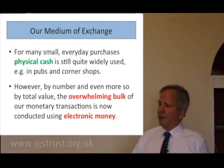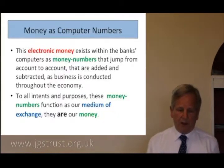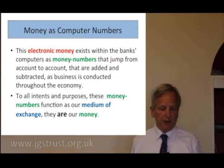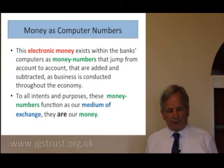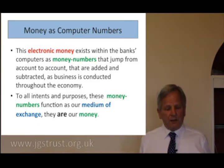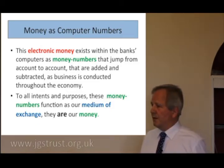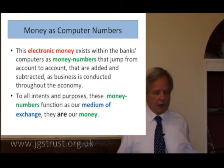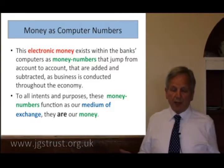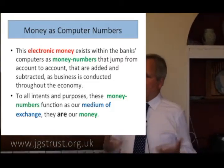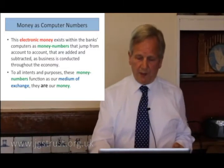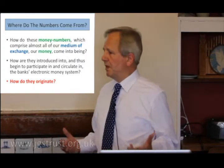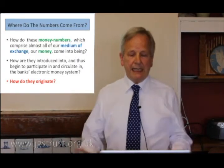The digits that jump from one bank account to another — that's how stuff is bought and sold. So these money numbers, these numbers within the bank's computers, are our medium of exchange. It's what we use to run our economy, and in that sense they are our money, our money supply. So the question then arises: how do they come into being? Where do they come from? How do they get into the computers? How do they originate?